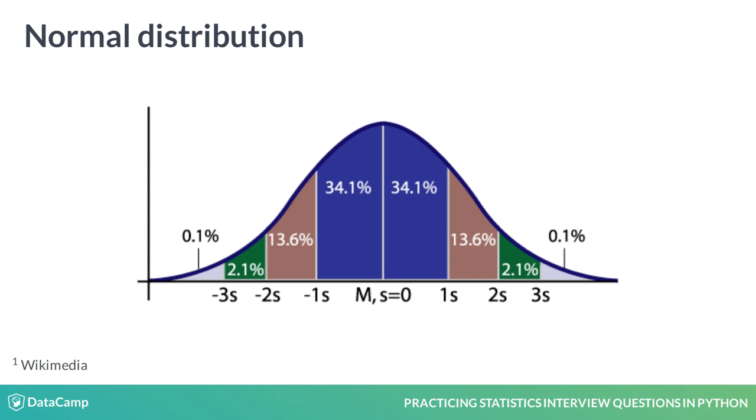This rule states that approximately 68% of observations fall within one standard deviation of the mean, 95% of observations within two standard deviations, and 99.7% within three deviations. It's good to have this memorized.